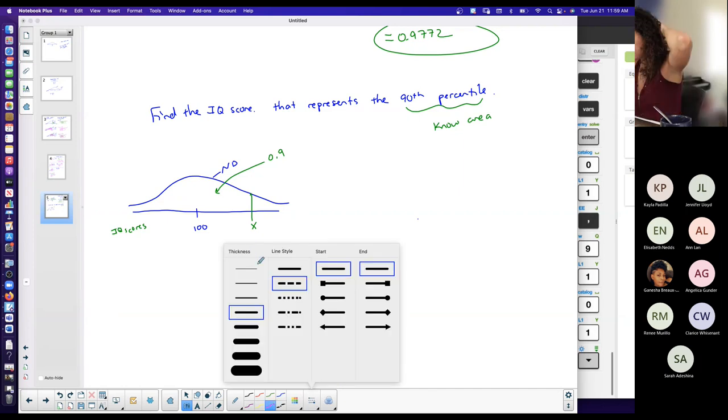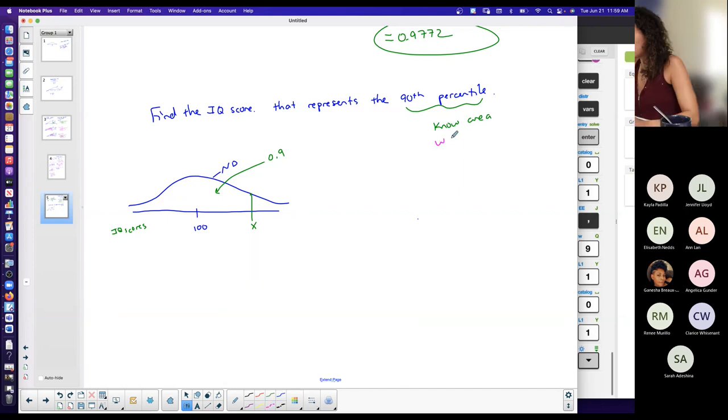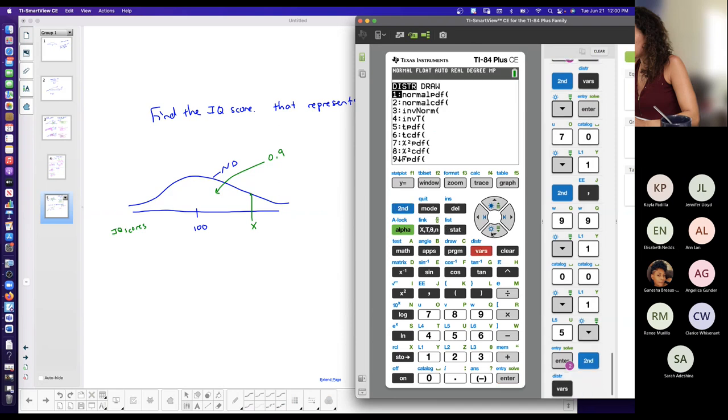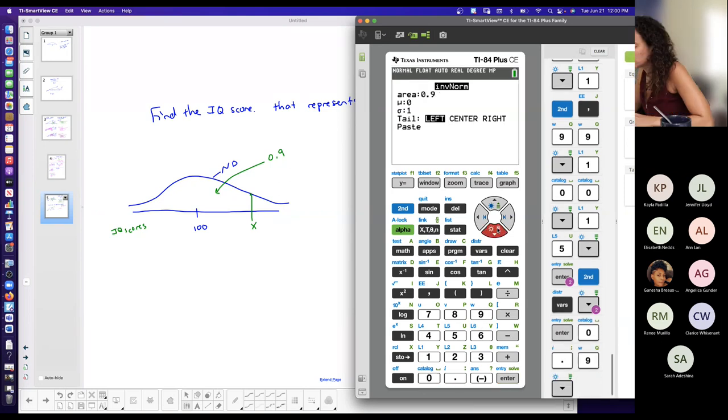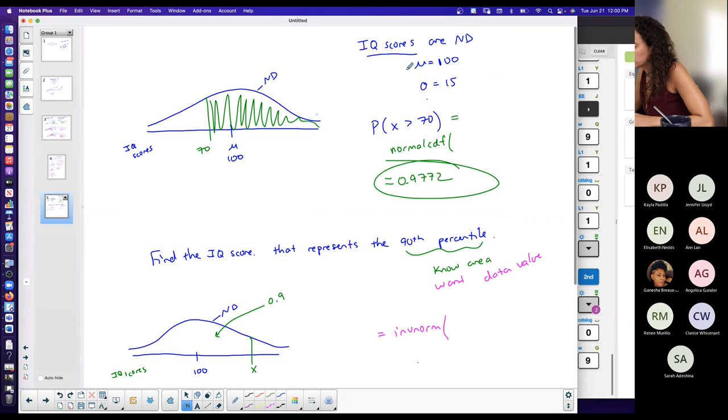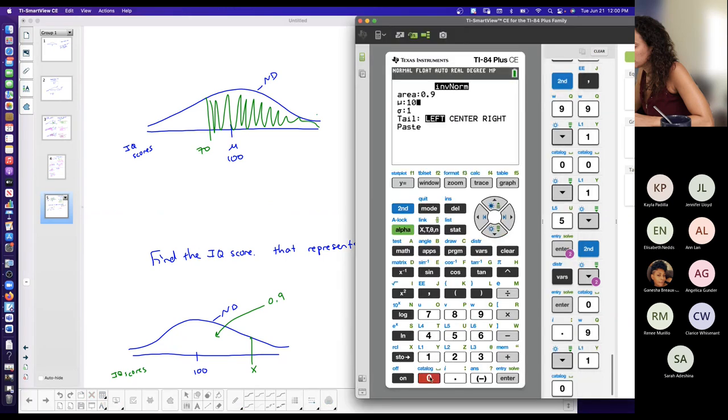So again, if I know the area and I want, in this particular case, data value, which in this case is an IQ score, I'm going to do inverse norm. Second VARS, inverse norm. My area. Now if you have this option, you could choose what you want to do. I have the area to the left, so we'll keep it left. And those of you that don't have this option, it automatically assumes that. And the area to the left is 0.9 because it's the 90th percentile. But my mean and my standard deviation are changing because now I'm talking about IQ scores and not Z-scores. My mean is 100. My standard deviation is 15.